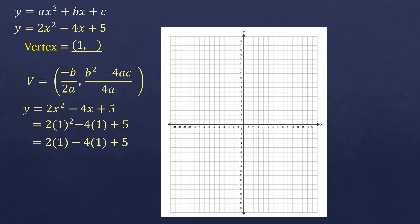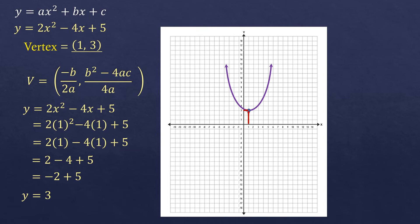So 2 times 1 is 2, minus 4 times 1 is 4, plus 5. Then 2 minus 4 is negative 2, and combining negative 2 and 5 gives positive 3. The y-coordinate is positive 3. So our vertex is at (1, 3). If you use the formula b squared minus 4ac over 4a, you get the same result. Let's plot it: x equals 1 and y equals 3. The vertex is here, and our graph is located at vertex (1, 3), opening upwards.